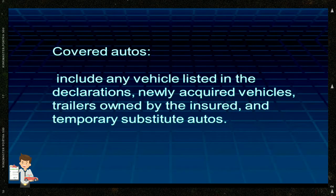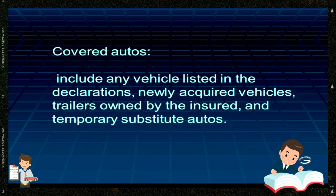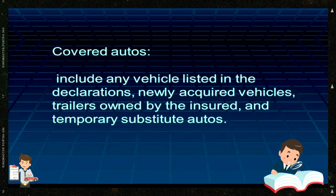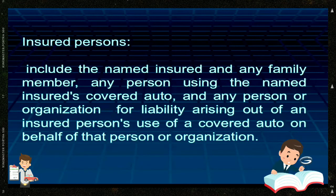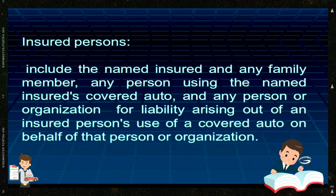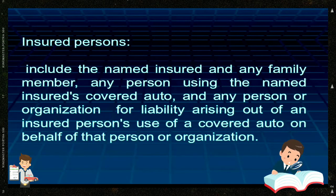Covered Autos include any vehicle listed in the declarations, newly acquired vehicles, trailers owned by the insured, and temporary substitute autos. Covered persons include the named insured and any family member, any person using the named insured's covered auto, and any person or organization for liability arising out of an insured person's use of a covered auto on behalf of that person or organization.